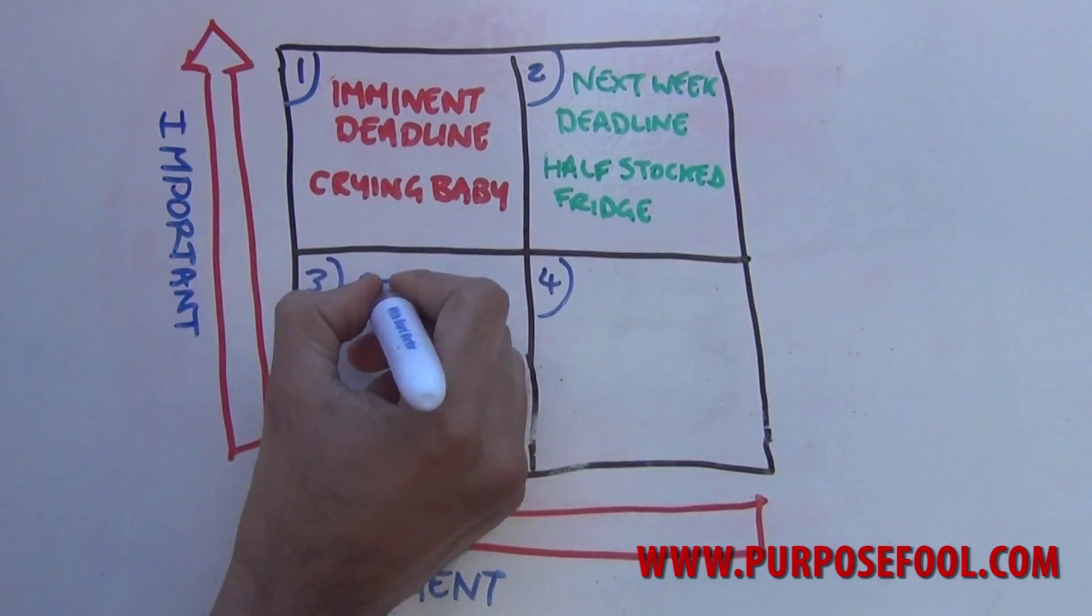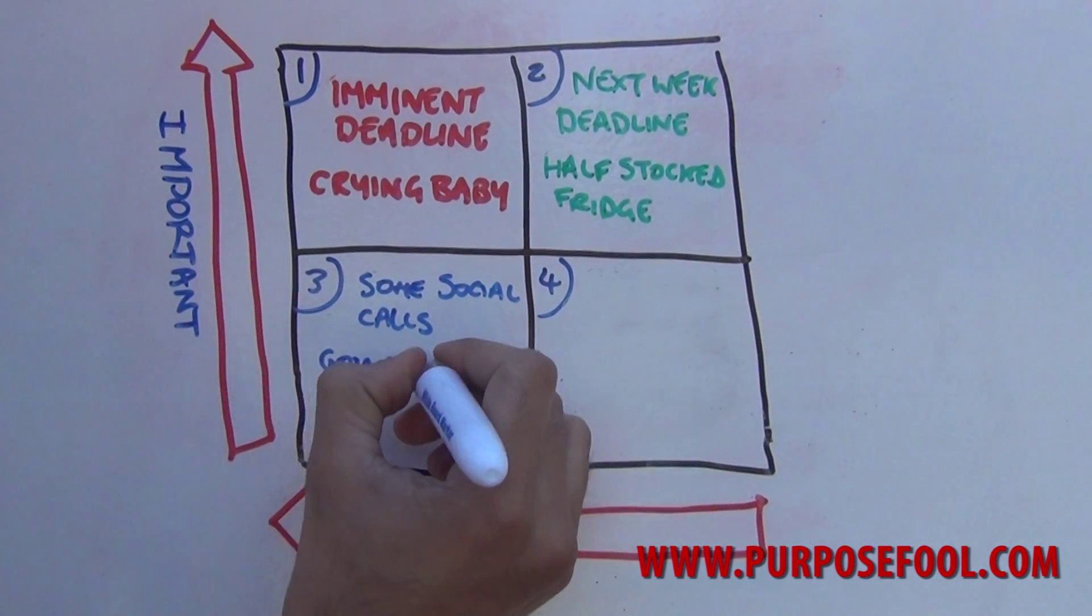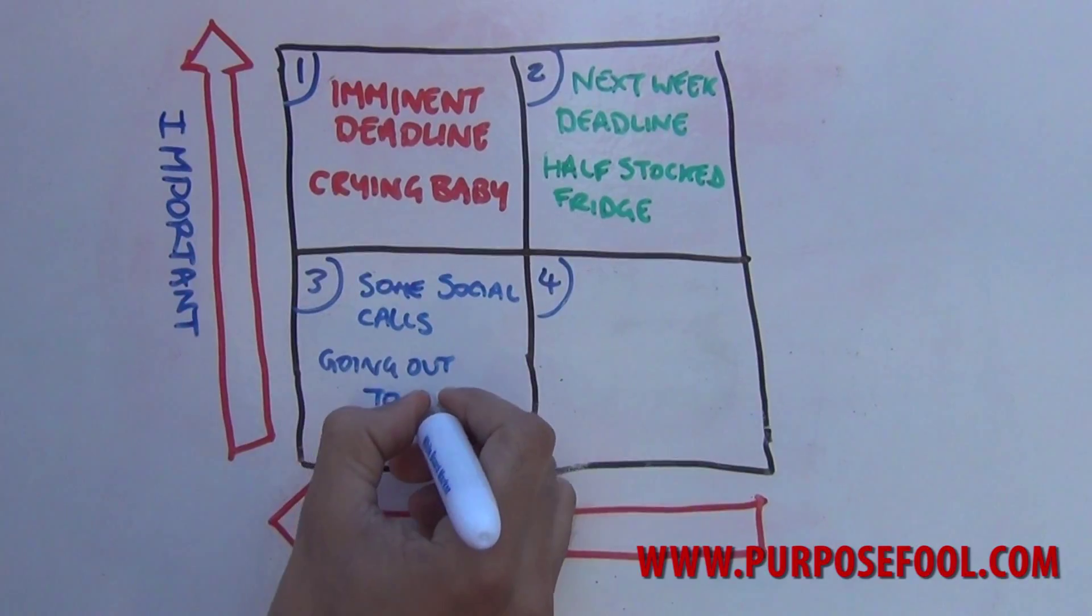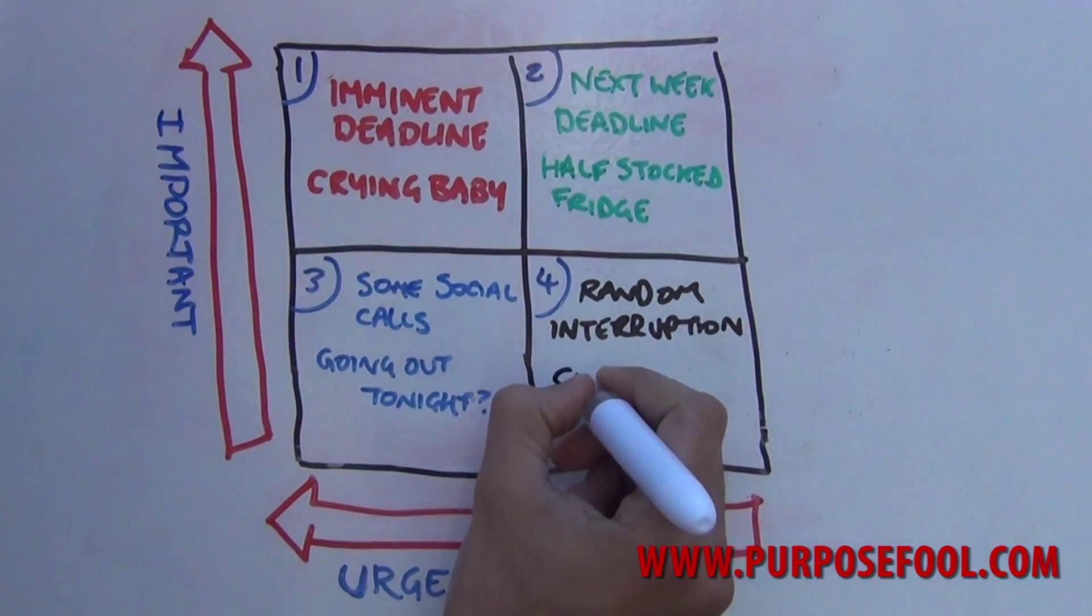This third quadrant is the one that people have the most questions about. They'll often ask how can something not be important yet be urgent. Well, it's normally social calls. It could be something like your friends inviting you to the cinema this evening. It's time sensitive but it may not be important in terms of what you're trying to achieve.